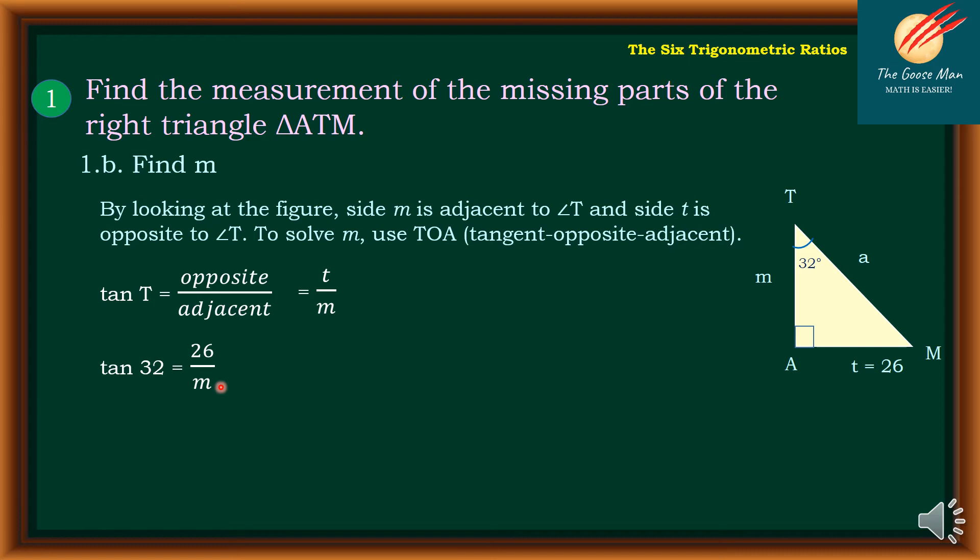If we multiply both sides of the equation by M, I come up with M times tangent 32 equals 26. Since I'm looking for the value of M, I'll divide both sides of the equation by tangent 32, so I come up with M equals 26 over tangent 32.